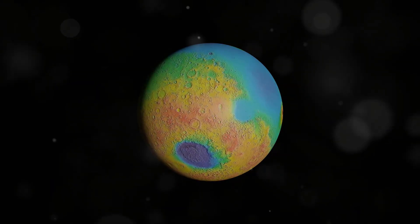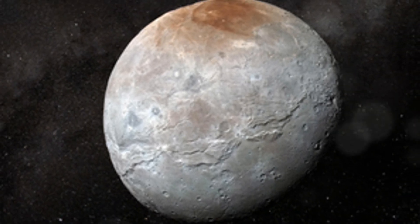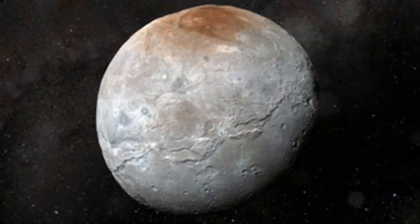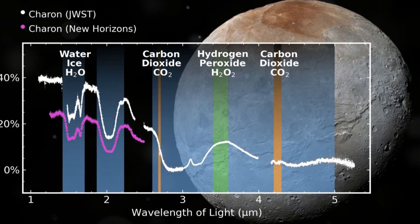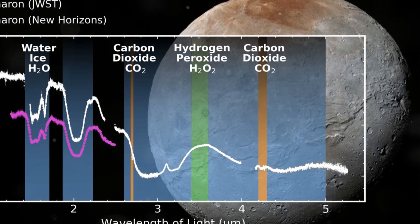First up, it's all about Charon's composition. Astronomers have detected both carbon dioxide and hydrogen peroxide on this icy moon. This discovery gives us invaluable insights into the makeup and formation of these distant bodies at the edge of our solar system.